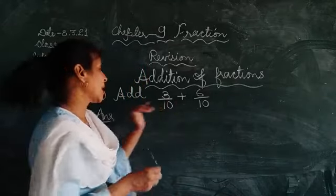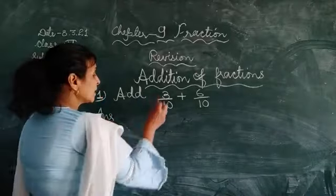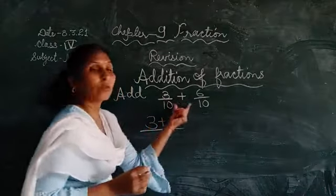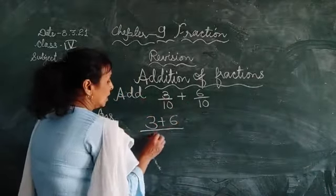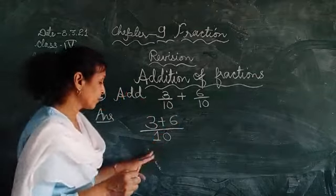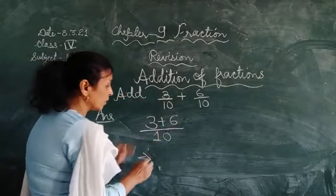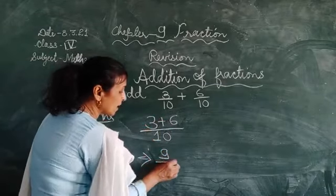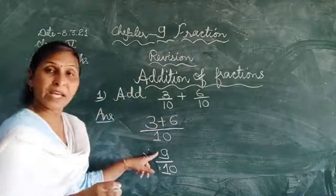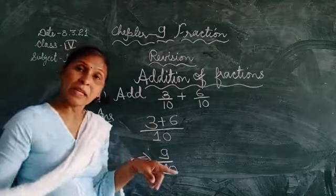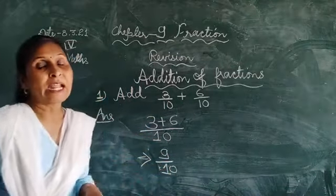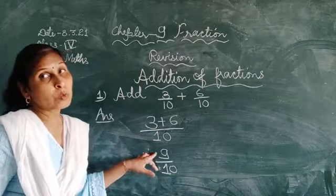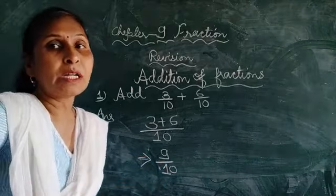Aur jab denominators same hote hain, to isko hum kaise add karte hain? Numerators ko is tarah se add karte hain, aur in dono mein se hum common denominator ko yahan par. Aur here hum in dono ko add karte hain numerators ko. 6 plus 3 that is 9 upon 10. To kya fraction aaya answer mein? Add karne pe 9 upon 10. That is the answer.